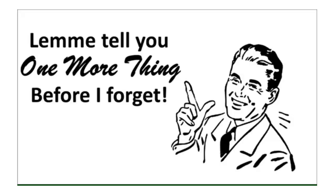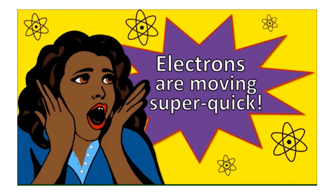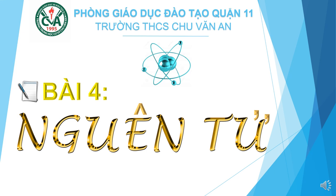Let me tell you one more thing before I forget — electrons move super quick. Từ bài hát thú vị vừa rồi, có thể thấy được nguyên tử là hạt vô cùng nhỏ. Từ nguyên tử tạo nên mọi chất. Nguyên tử lại được tạo thành từ 3 loại hạt nhỏ hơn là proton, neutron và electron.